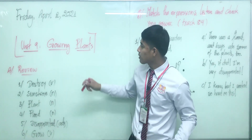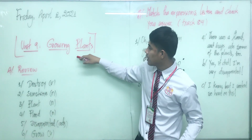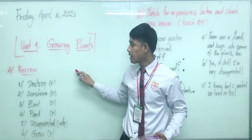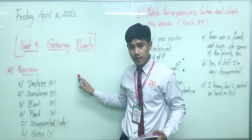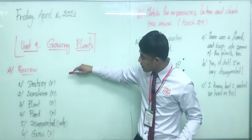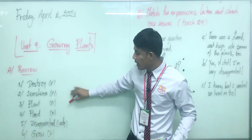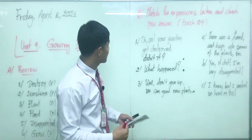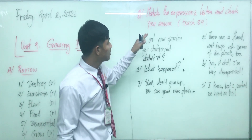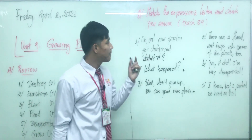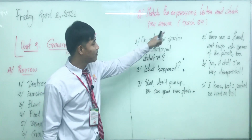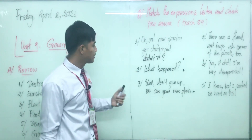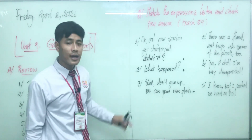Today we are going to review Unit 9: Growing Plants. In the previous session we learned vocabulary from Path A. Teacher will review that vocabulary again, and then you will do one extra exercise from Path B by matching the expressions. Listen and check your answer with track 89.